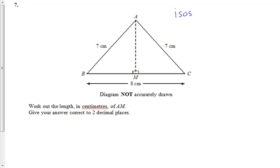Now I know it's an isosceles triangle because 7cm and 7cm are the same. It's not equilateral because we've got 8cm on the bottom.